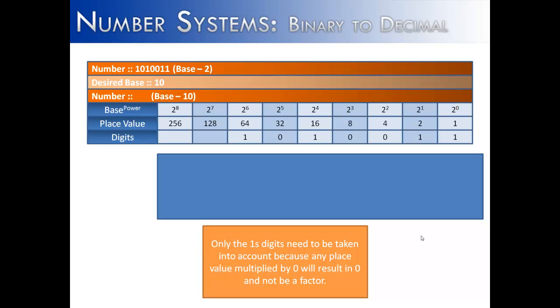Again we write out our positional table, and we fill it in with the digits beneath it. We highlight the placeholders that have a 1 in them, and then we add together those digits.